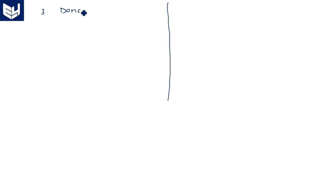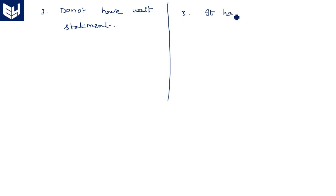Third difference: functions do not have a wait statement, whereas procedures have a wait statement. A wait statement stops the execution for some specified duration — for example, wait on a condition, wait on a boolean expression, or wait for some time.